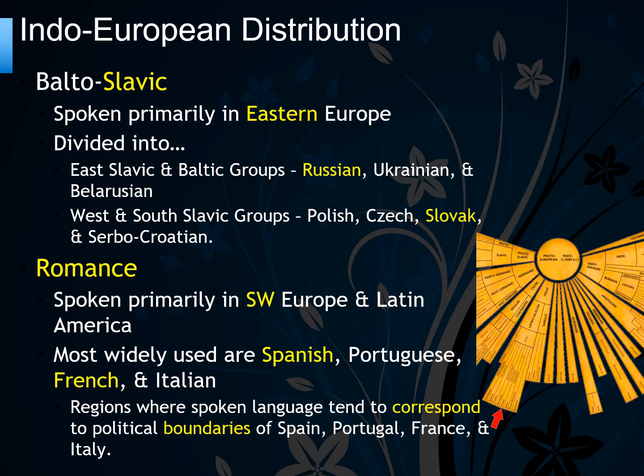The third branch is the Balto-Slavic branch, mainly found in Eastern Europe, with the Eastern Slavic and Baltic groups like Russian and Ukrainian, and the West and Southern Slavic groups like Polish, Czech, Slovak, and Serbo-Croatian.